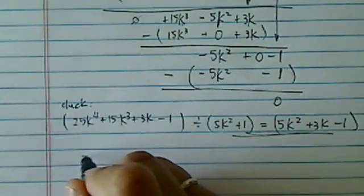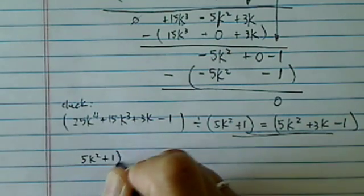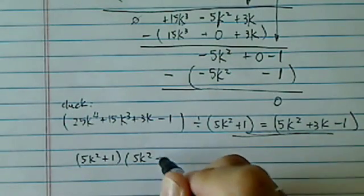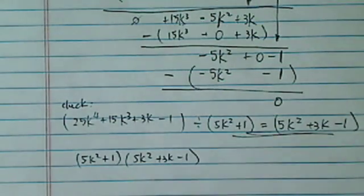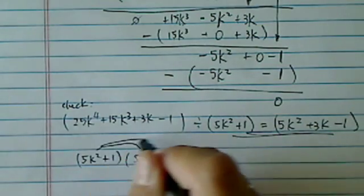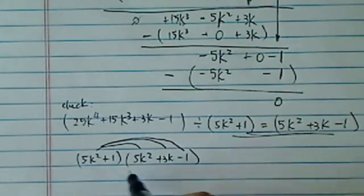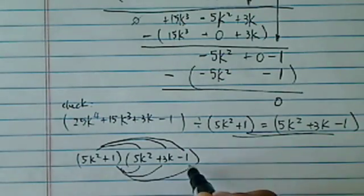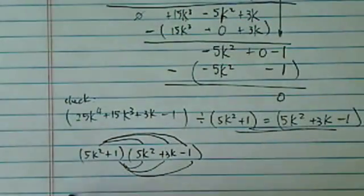Let's check our work. So 5k squared plus 1, 5k squared plus 3k minus 1. I'm going to multiply that. I'll do the overhead, and then this is what I call underbelly, overhead underbelly.